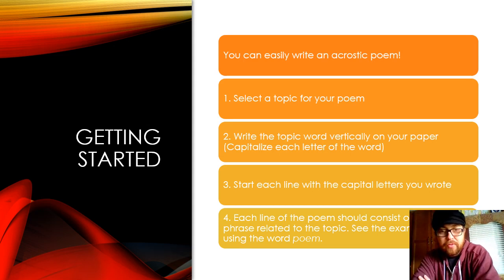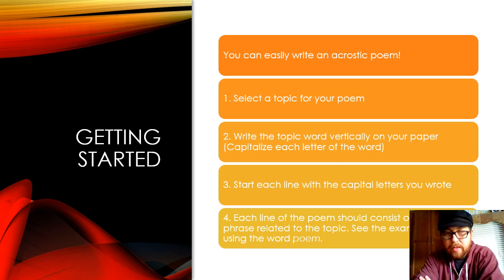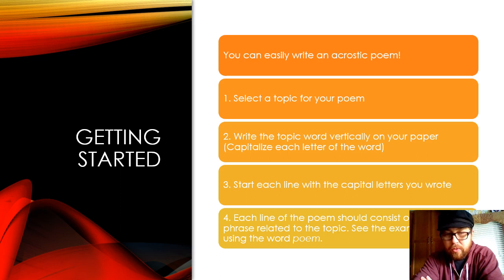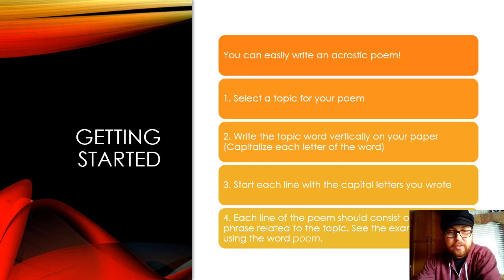Here's how to easily write an acrostic poem. Select a topic for your poem. Write the topic word vertically on your paper. You want to capitalize each letter of the word. Start each line with the capital letters you wrote. Each line of the poem should consist of a phrase related to the topic. See the examples below.